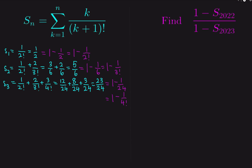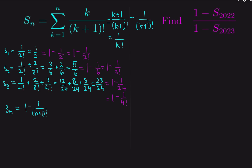In general, we would like to prove that S of n equals 1 minus 1 over (n+1) factorial. Notice that the term k over (k+1) factorial can be rewritten as (k+1) over (k+1) factorial minus 1 over (k+1) factorial. We can cancel k+1 from numerator and denominator to get 1 over k factorial, since (k+1) factorial equals (k+1) times k factorial.